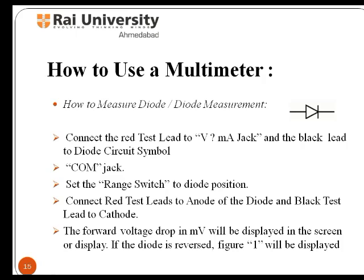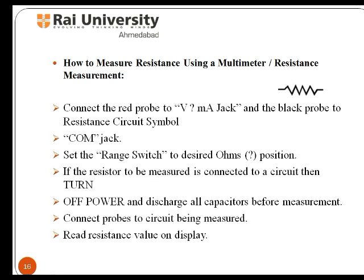To measure a diode, first connect the red test lead to the milliampere jack and the black lead to the diode circuit symbol. Now set the range switch to the diode position and connect the red test lead to the anode of the diode and the black test lead to the cathode. The forward voltage drop in millivolts will be displayed on the screen. If the diode is reversed, figure 1 will be displayed.